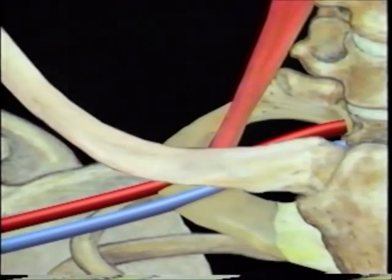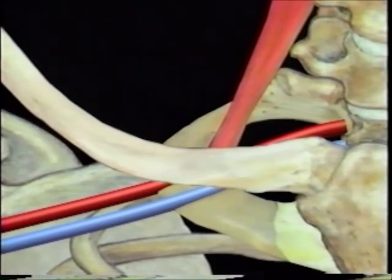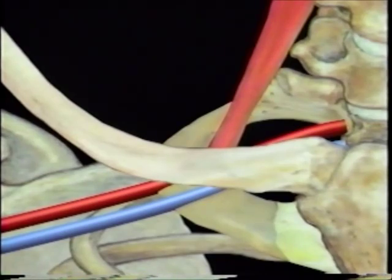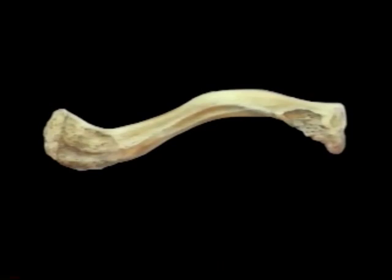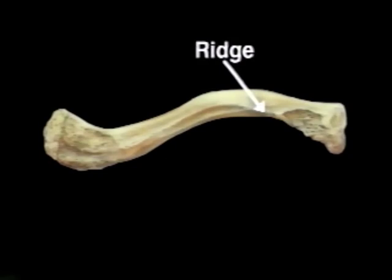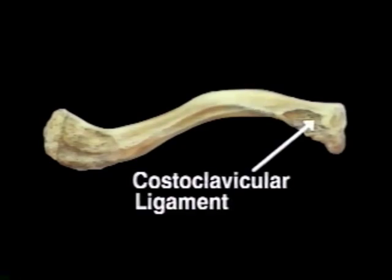The clavicle articulates medially with the sternal manubrium and the first costal cartilage, and is connected to the upper surface of the first rib and its cartilage by a tough fibrous structure called the costoclavicular ligament. The inferior aspect of the clavicle reveals a long shaft that is convex in the medial two-thirds and concave in the lateral third. The medial inferior surface, which lies superior to the first rib, is often a mere ridge. Near the inferior sternal end is a rough depressed area for the attachment of the costoclavicular ligament.